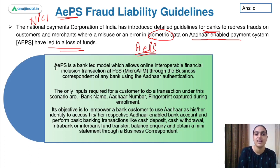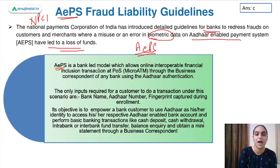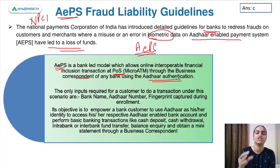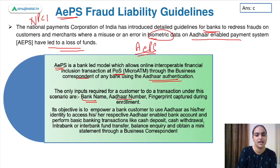As the name suggests, AEPS is an Aadhaar-enabled payment system where Aadhaar-based authentication is done. You can carry out different activities using your Aadhaar-enabled account — transfer amounts, deposit cash, withdraw cash, and more. It's a bank-led model allowing online interoperable financial inclusion transactions at the point of sale or micro ATM through the business correspondent of any bank, using just the bank name, Aadhaar number, and fingerprint.